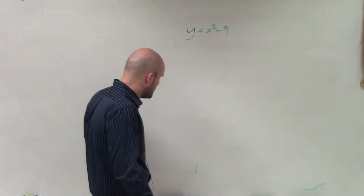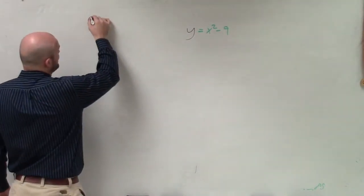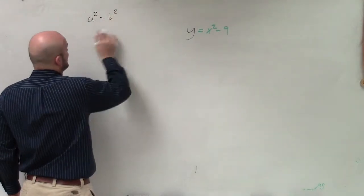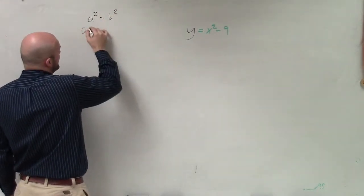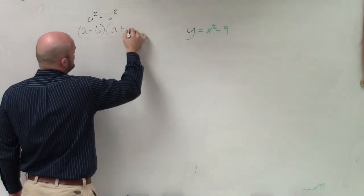So if I solve this using the difference of two squares, remember by factoring a difference of two squares, when I have a square term minus another square term, I can factor that into (a - b) times (a + b).